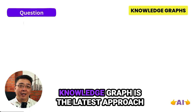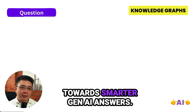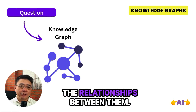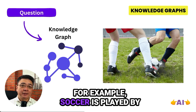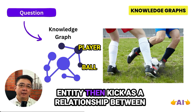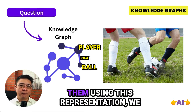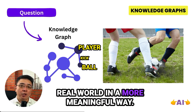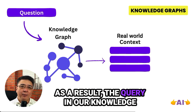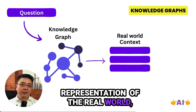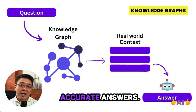We are now at number five out of eight design patterns. Knowledge Graph is the latest approach towards smarter Gen AI answers. Knowledge Graph represents the concepts in our world — entities and the relationships between them. For example, soccer is played by kicking the ball: you can have player and ball as entities, with kick as the relationship between them. Using this representation, we can represent real-world concepts in a more meaningful way, so queries on our Knowledge Graph return a more realistic representation of the world, thereby making AI generate more accurate answers.